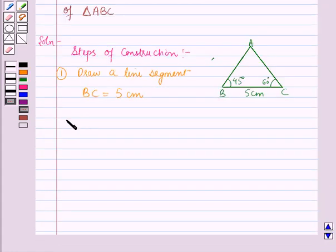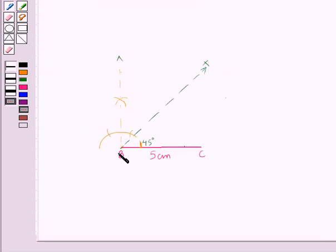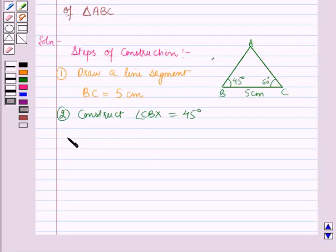Now in the second step we will construct an angle CBX equal to 45 degrees. As you can see here we have constructed an angle CBX equal to 45 degrees.